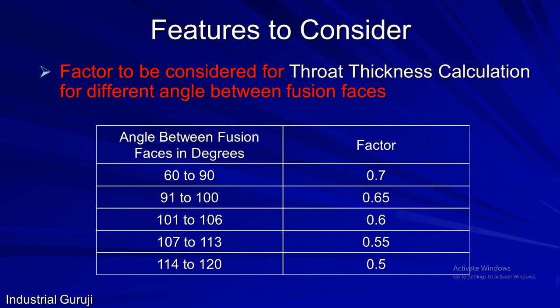The relations we have seen apply when the angle between two members is 90 degrees. But when the angle is different, the following factors are used for throat calculation. If the angle is 60 to 90 degrees, the factor is 0.7. If the angle is 91 to 100 degrees, the factor is 0.65. If the angle is 101 to 106 degrees, the factor is 0.6. If the angle is 107 to 113 degrees, the factor is 0.55. And if the angle between the two fusion faces is 114 to 120 degrees, the factor is 0.5.